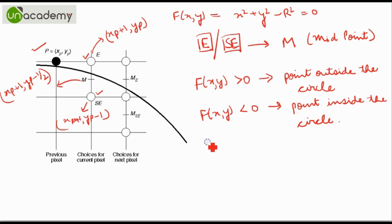If this function evaluates to less than zero, that means the point is inside the circle. So we will calculate F of M and name it as D, the decision variable, that will be equals to F of (XP+1, YP-1/2).